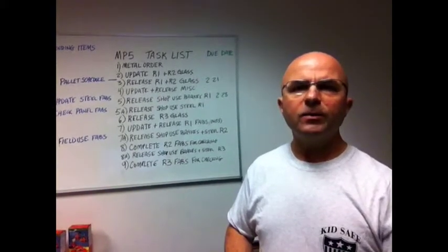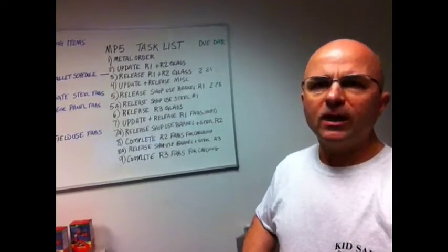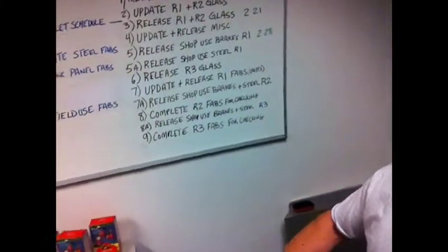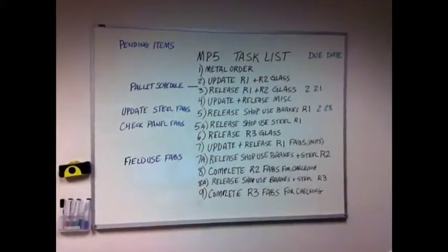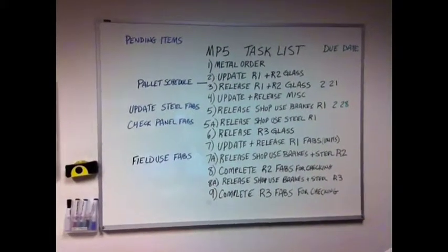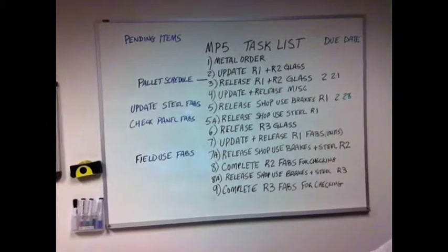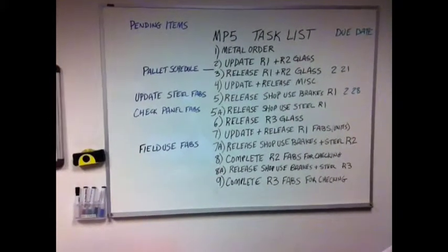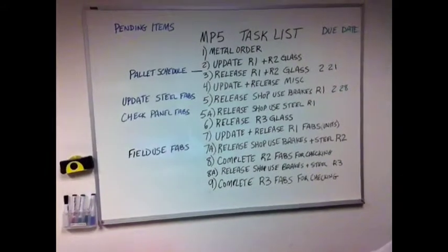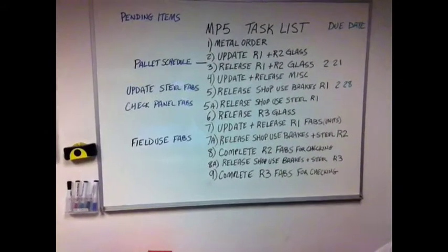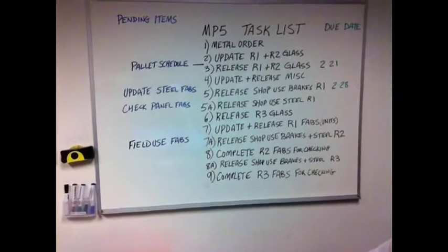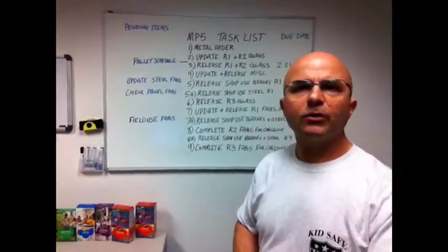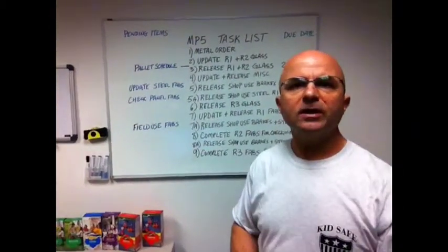So on Moffat Building 5 we have a lot of tasks left, and we decided to go ahead and list out what those tasks are and what the timeframes and the priorities are. So you can see I've got the pending items on the left, the task list, and the due dates. As we go through the project we can use the visual controls to keep us on task.